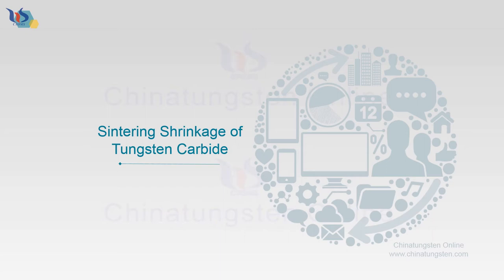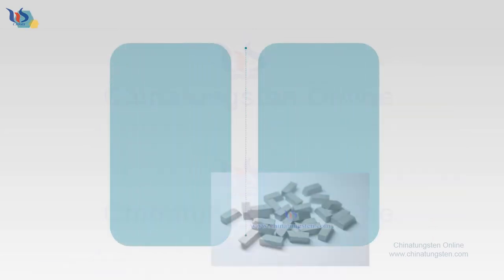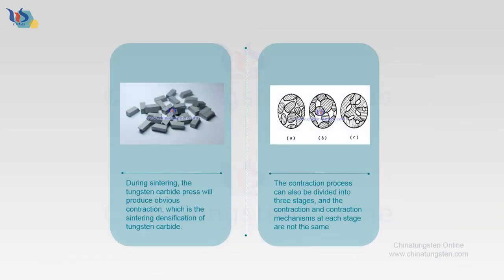Sintering shrinkage of tungsten carbide. During sintering, the tungsten carbide press will produce obvious contraction, which is the sintering densification of tungsten carbide, similar to the densification process. The contraction process can also be divided into three stages, and the contraction and contraction mechanisms at each stage are not the same.